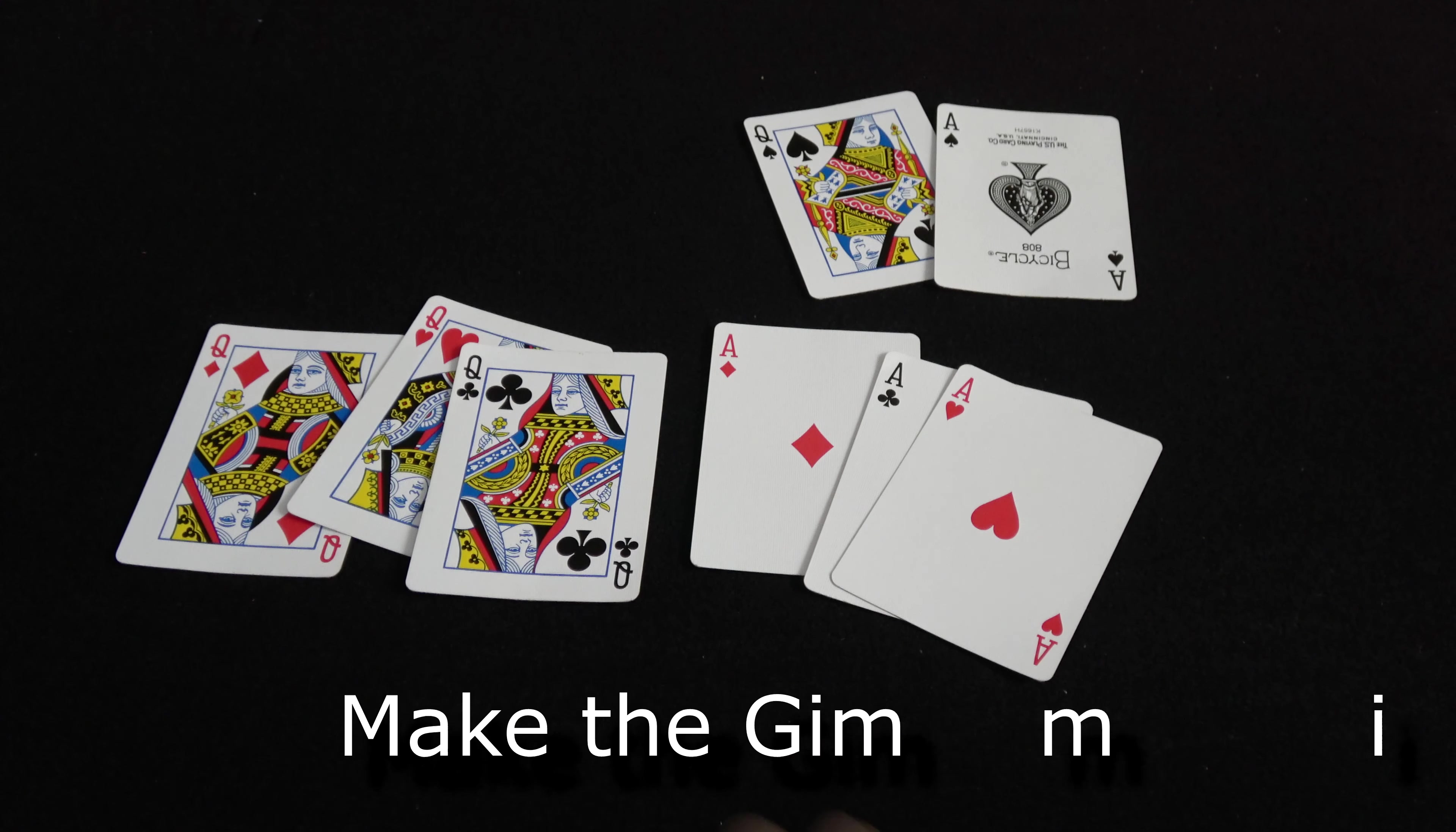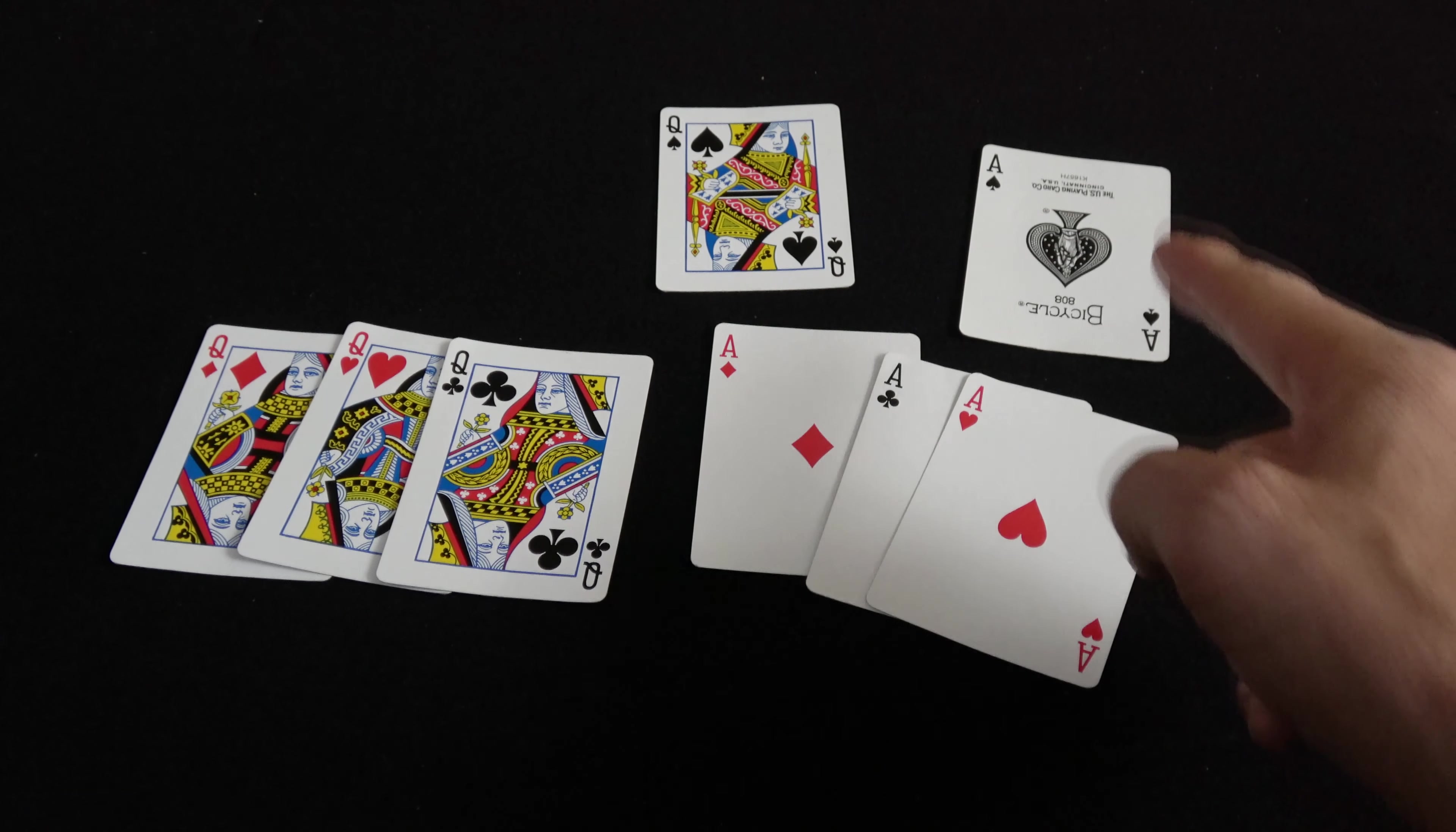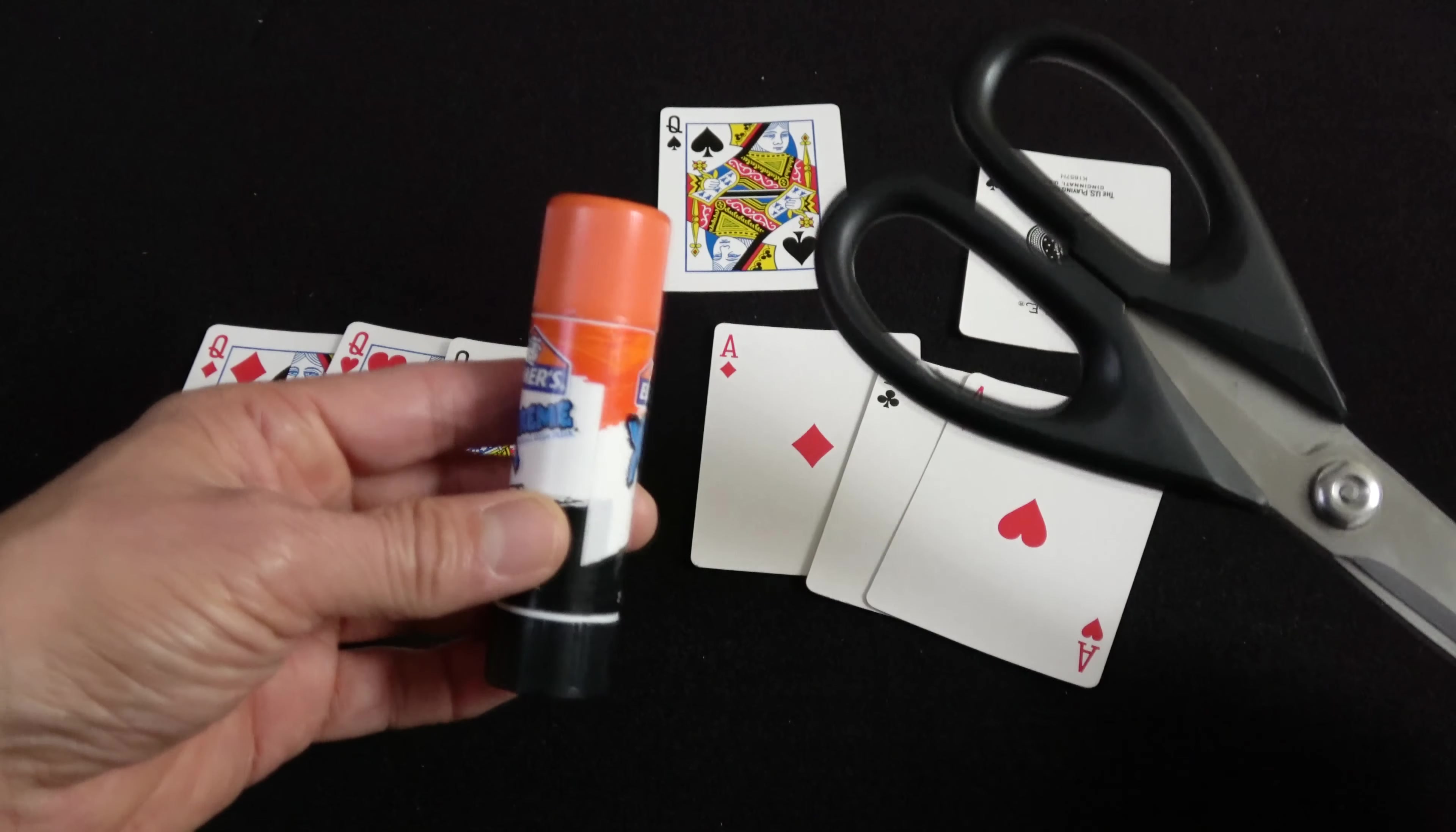To perform this trick, you're going to need to create a gimmick. You're going to need four queens from a deck and three aces. You're also going to need scissors and glue.